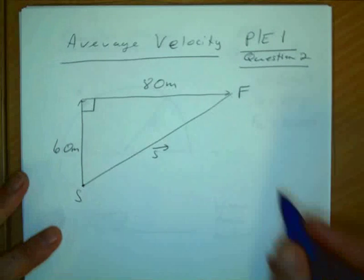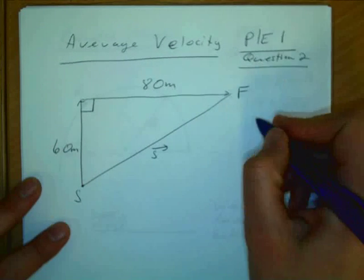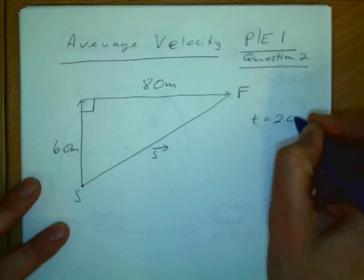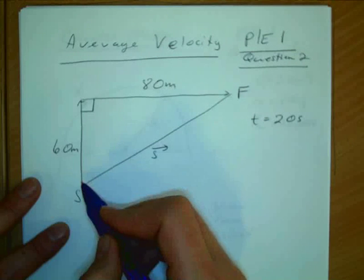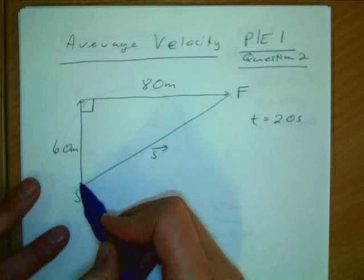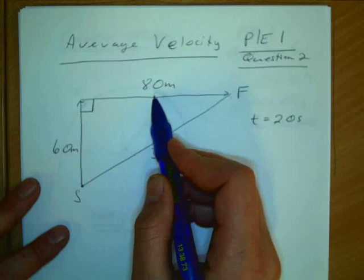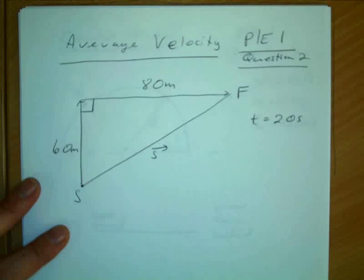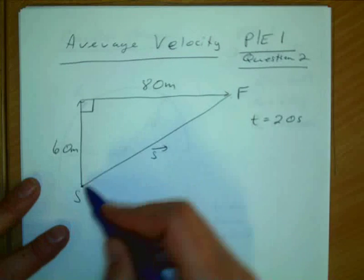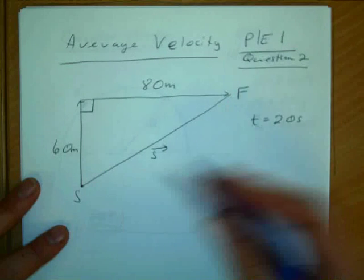Now what was the time that it took to go from S to F? 20 seconds. If we're doing the average speed calculation, you'd add up those and divide them by 20 and get seven meters per second. But because it's average velocity, we need to find this distance here, so we're just going to use Pythagoras.